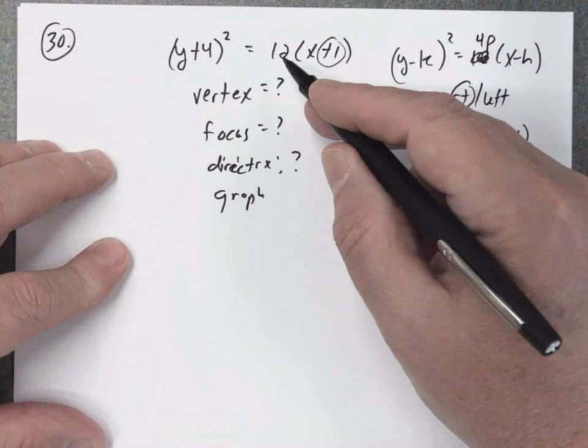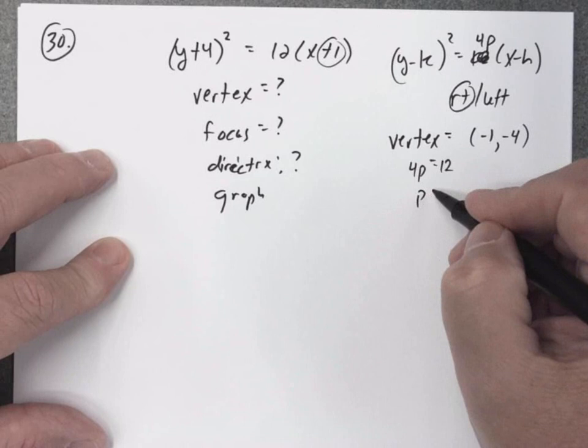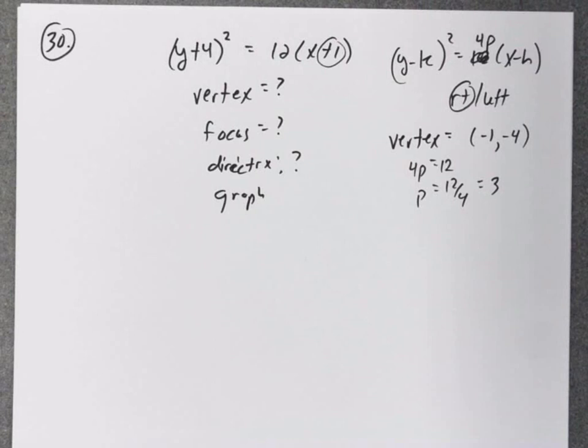We need to find p. Well, I know 4p has to equal 12. Pretty easy to solve for p. Looks like p is 3.